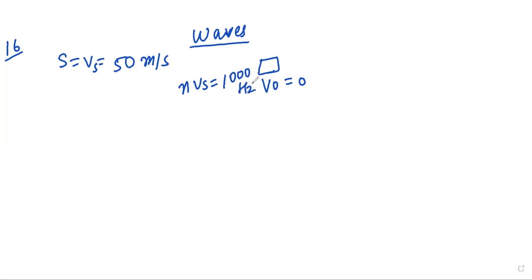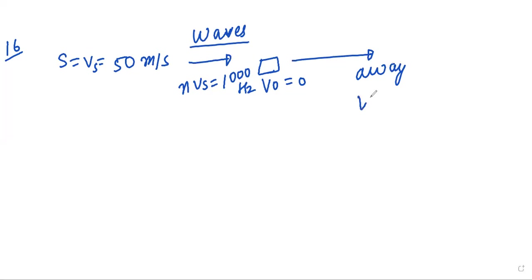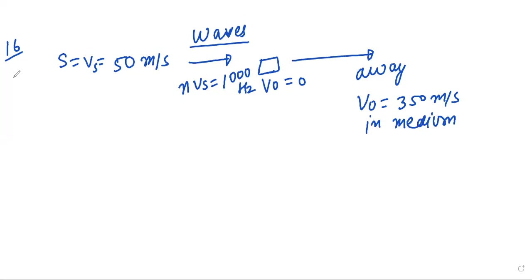What will be the apparent frequency of the source when it is moving towards the observer, and when it is moving away from the observer? The velocity of sound in the medium is given as 350 meters per second. This question appeared in the year 2000.